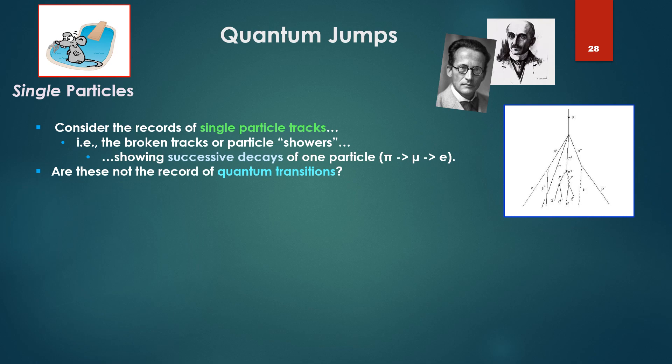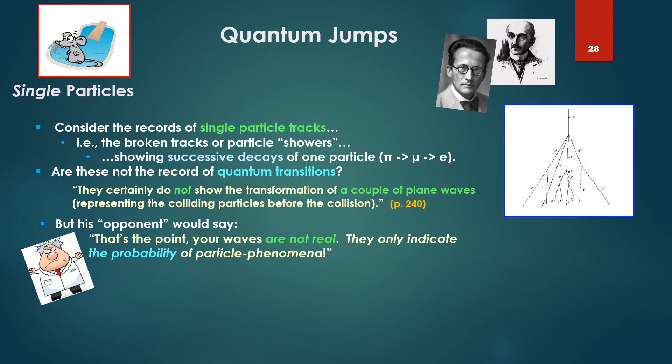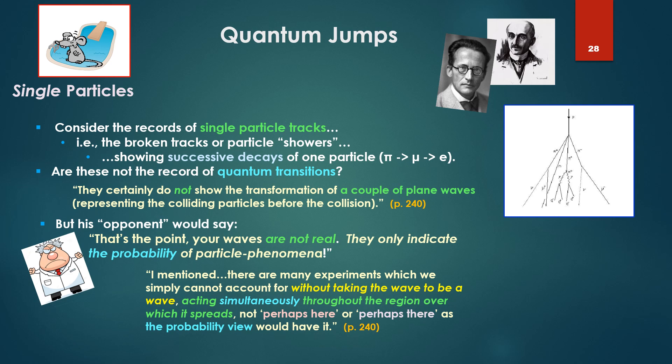These are the records of single particle tracks. Another section, next section of Schrödinger's article. It is the broken tracks for particle showers, showing successive decays of one particle, from a π to a μ to an ε, whatever. Are these not the record of quantum transitions? He says they certainly do not show the transformation of a couple of plane waves representing the colliding particles before the collision. But his opponent would say, that's the point. Your waves are not real. They only indicate the probability of particle phenomena.